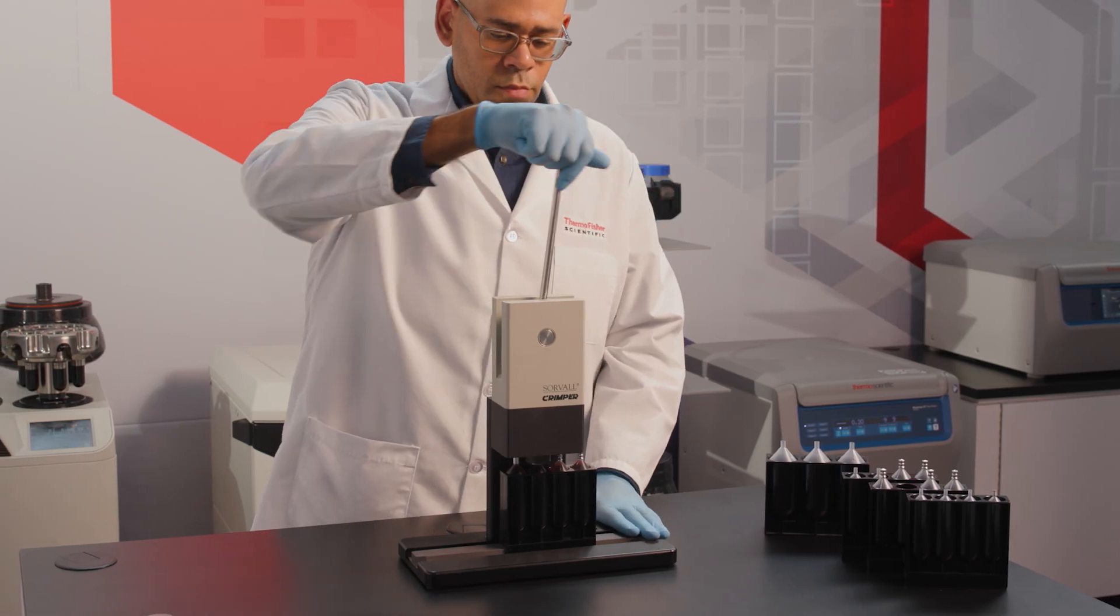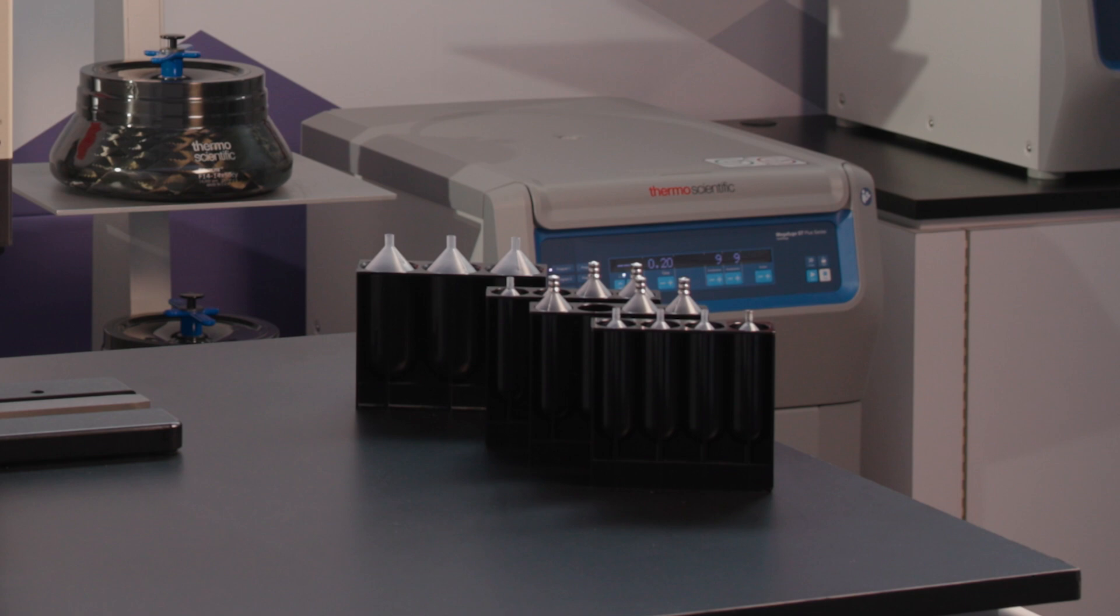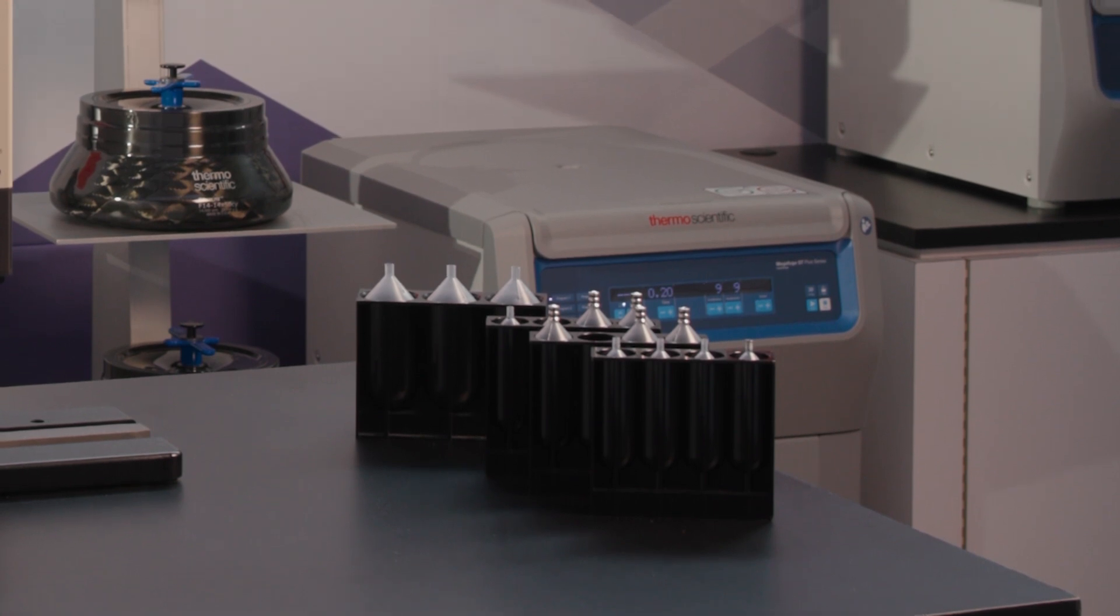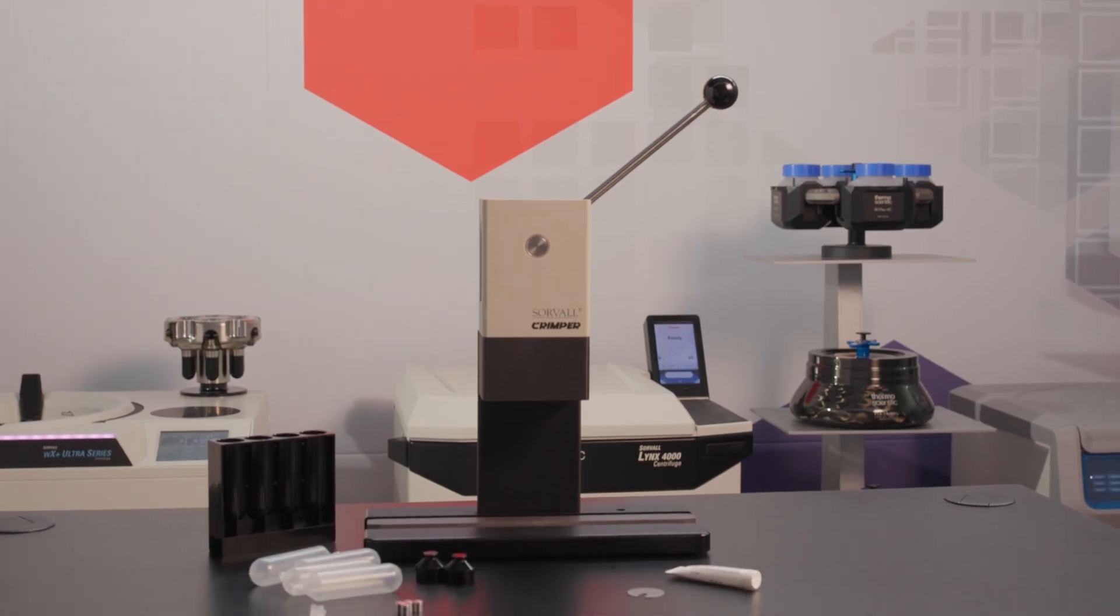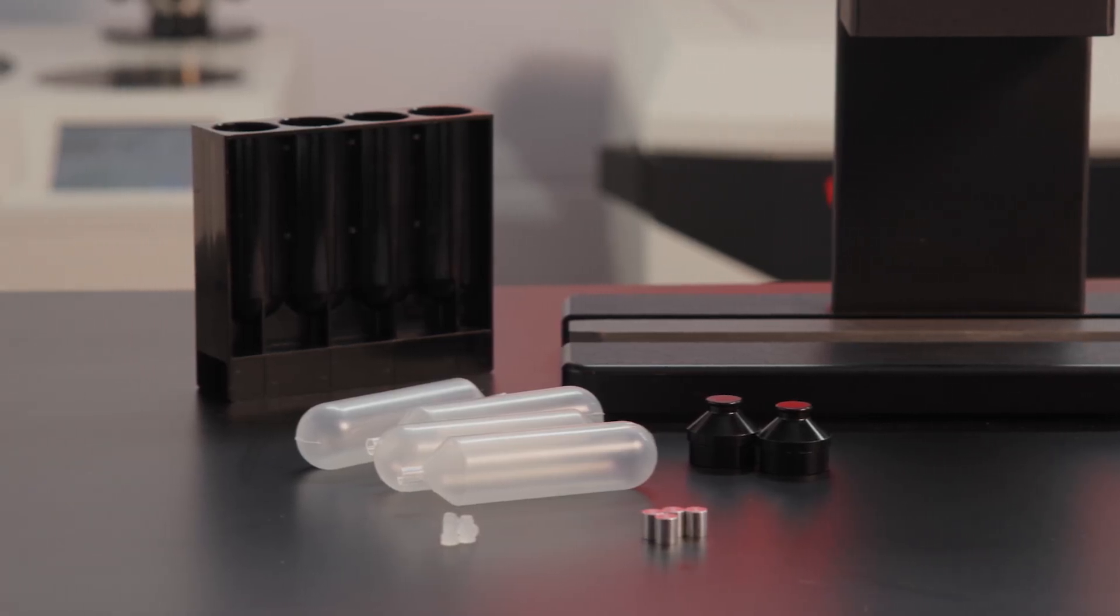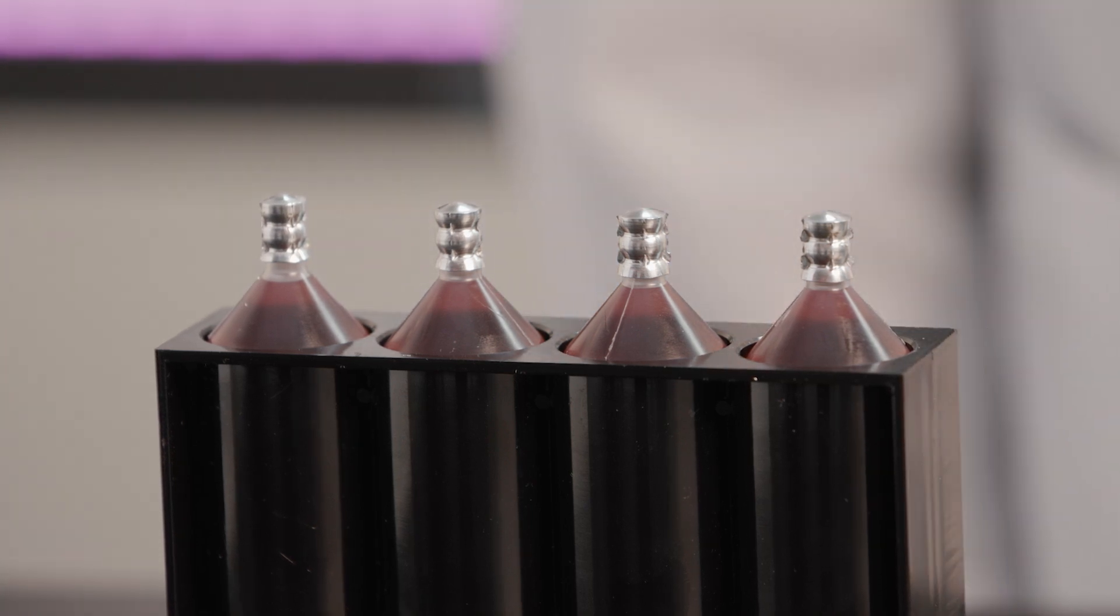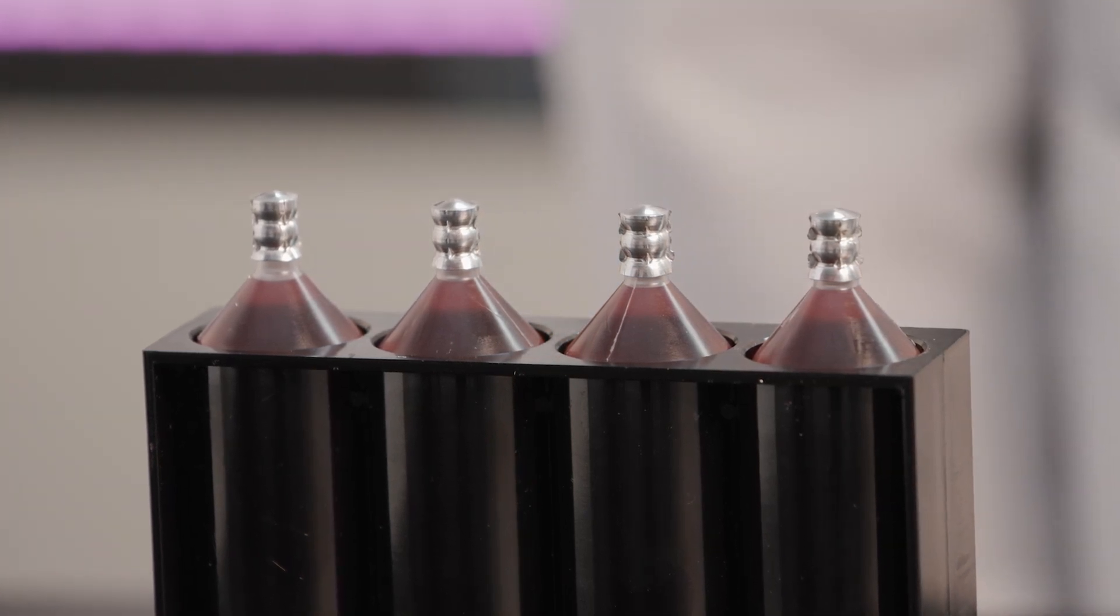Today we're going to talk about how to seal ultracrimp and clear crimp tubes for use in ultraspeed centrifugation. We'll use the thermoscientific crimper tool to seal thin walled ultracrimp polyallomer tubes and clear crimp polyethylene tubes to prepare them for ultracentrifugation.